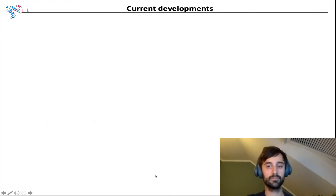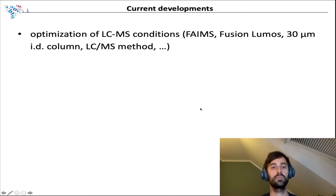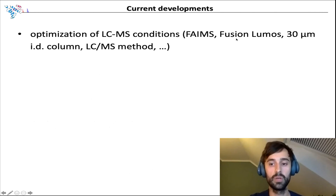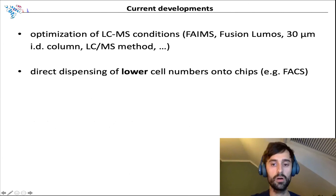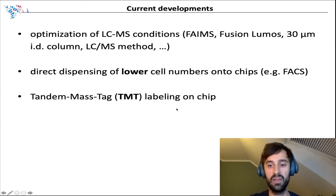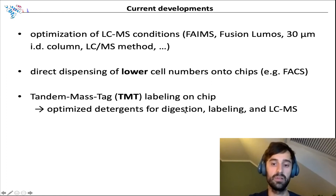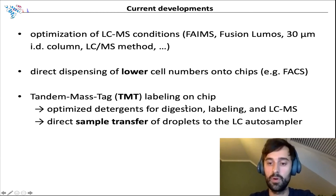We are certainly seeing room for improvement. We haven't optimized the LC-MS method yet, so we are currently working with FAIMS on our Fusion Lumos and also with low-ID nanobore columns. Furthermore, we aim to implement direct dispensing of exact and lower cell numbers directly onto the chip. We also like TMT and approaches like Scope-MS, which is why we are working on an optimized buffer and detergent system for on-chip labeling. This also comprises a direct sample transfer of the merged TMT samples into the sample loop of the LC.